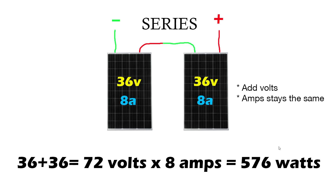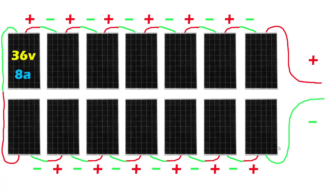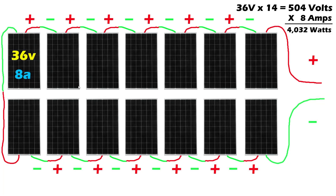The watts stayed the same but how we got there was different. What's very important when installing your own solar panel system is knowing what voltage and amperage your inverter can handle. From the previous video, I'm not supposed to exceed 550 volts, so I'm trying to get as close to that as possible without exceeding it. Here's an example of 14 solar panels in series — positive to negative, positive to negative — and if these are 36 volts at 8 amps each, we end up with 504 volts at 8 amps, which is 4,032 watts.